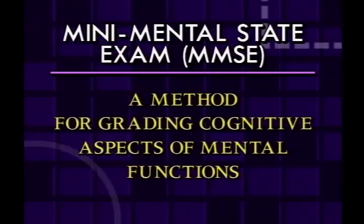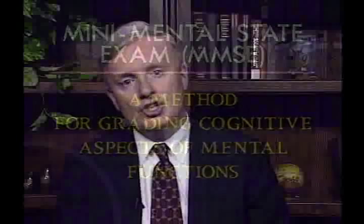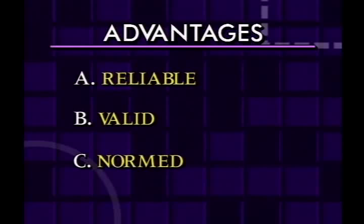Next we'll discuss the cognitive screen — the Folstein Mini-Mental Status Examination. The Mini-Mental Status is a method of grading cognitive aspects of mental functions. The advantages of using the Folstein Mini-Mental are that it's reliable — multiple trained people in your office should get the same scores — it is valid and works well in both the elderly and the mentally ill, and it has been normed with published data used by many researchers. It's also been used in other studies, such as predicting ability to drive and predicting ability to give informed consent.